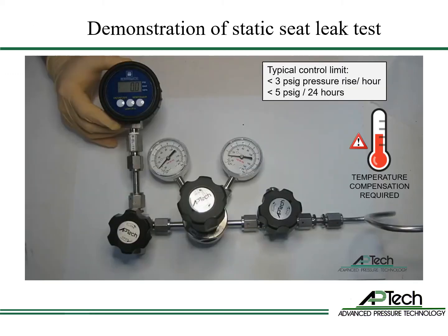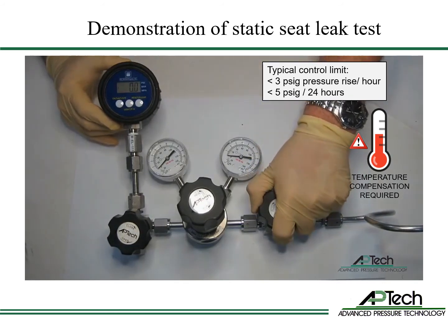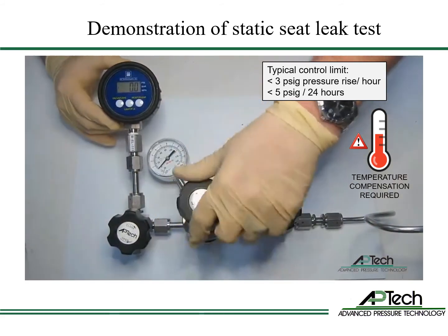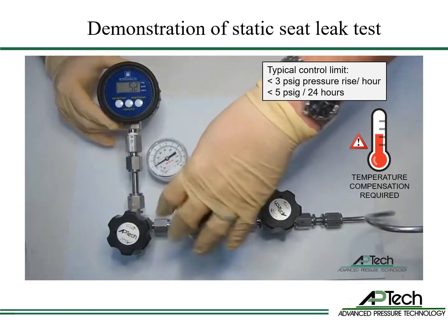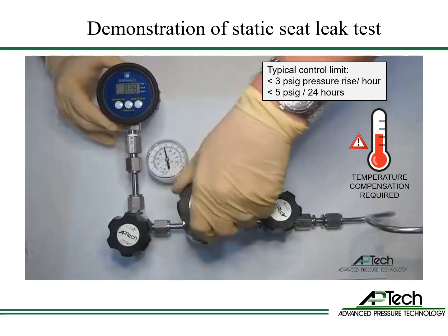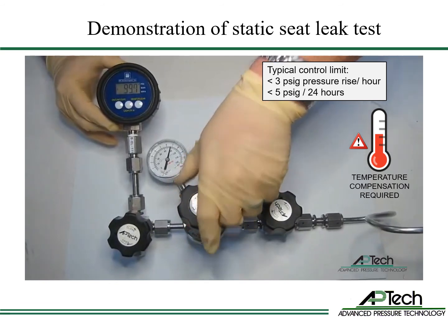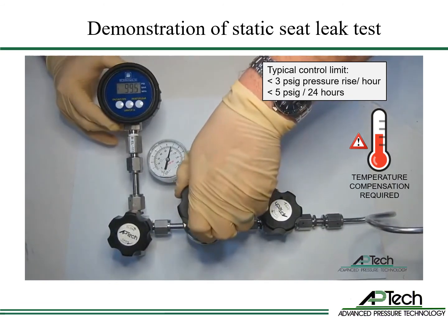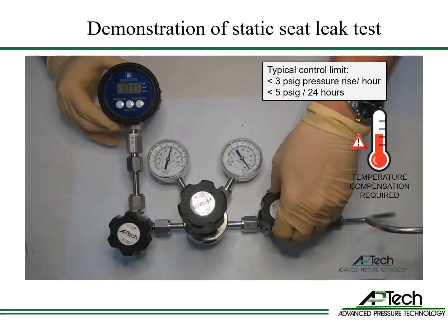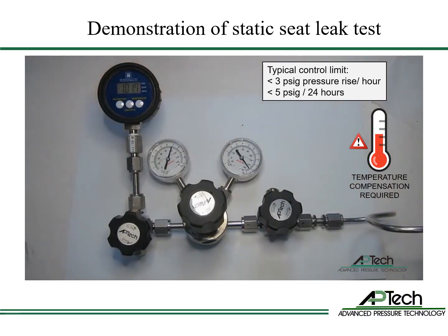Now let's demonstrate the static seat leak test for a regulator. Begin by pressurizing the regulator inlet with nitrogen and trap pressure by closing the inlet and outlet valves. Then set the desired regulator outlet pressure, making sure there is a pressure difference from inlet to outlet. After pressure adjustment, turn the regulator knob counterclockwise a quarter turn to release adjustment range spring force on the diaphragm. Confirm the shutoff of the upstream valve and downstream valve and monitor for a pressure change — rise or drop. An outlet pressure rise is an across-the-seat leak. Pressure drop is an outboard leak. Typical test specification is not more than 3 psig pressure rise in one hour and/or 5 psig in 24 hours.